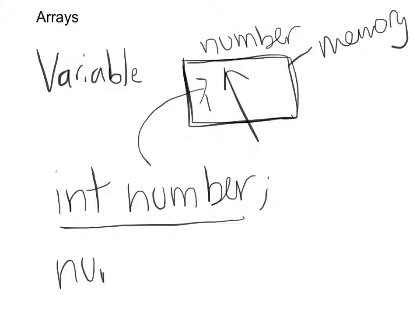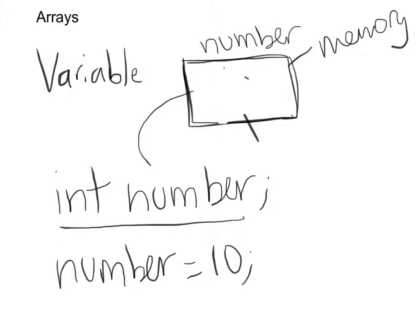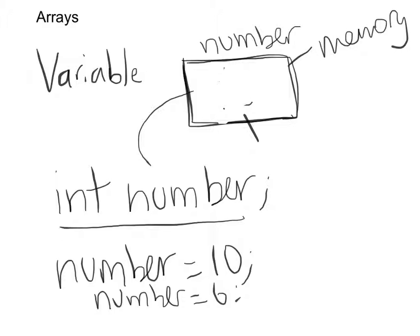If I said 'number equals 10', the computer would place 10 in that memory slot. If I said 'number equals 6', the computer would take out whatever was there and put 6 in its place. Now there are a couple of problems with this.